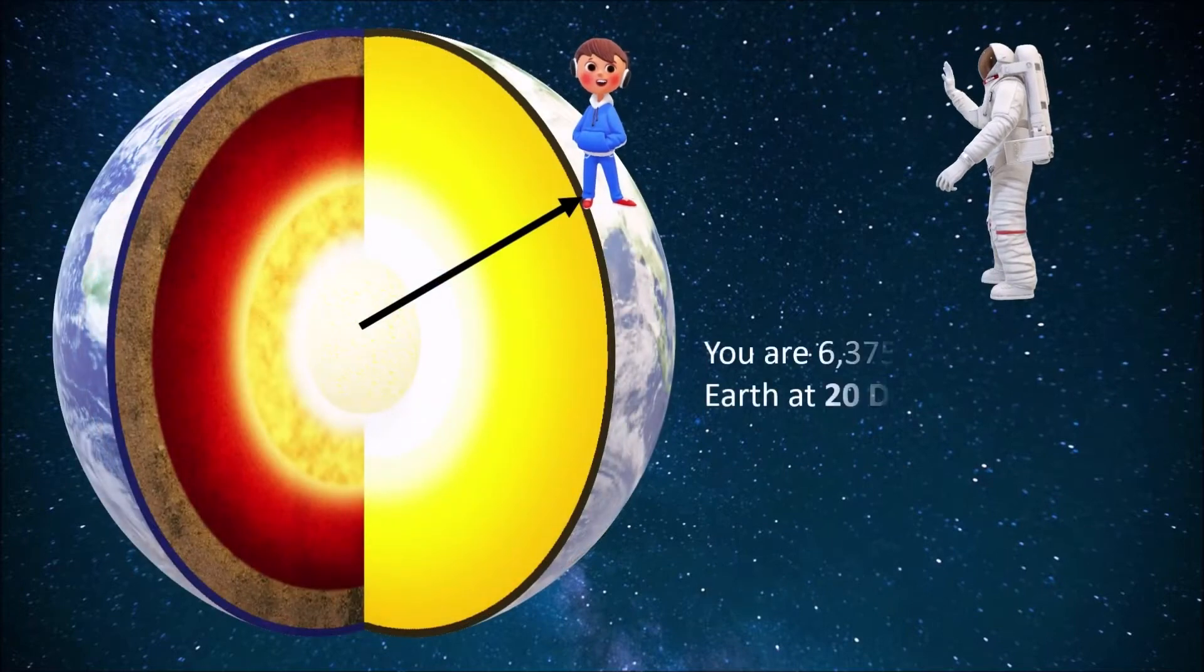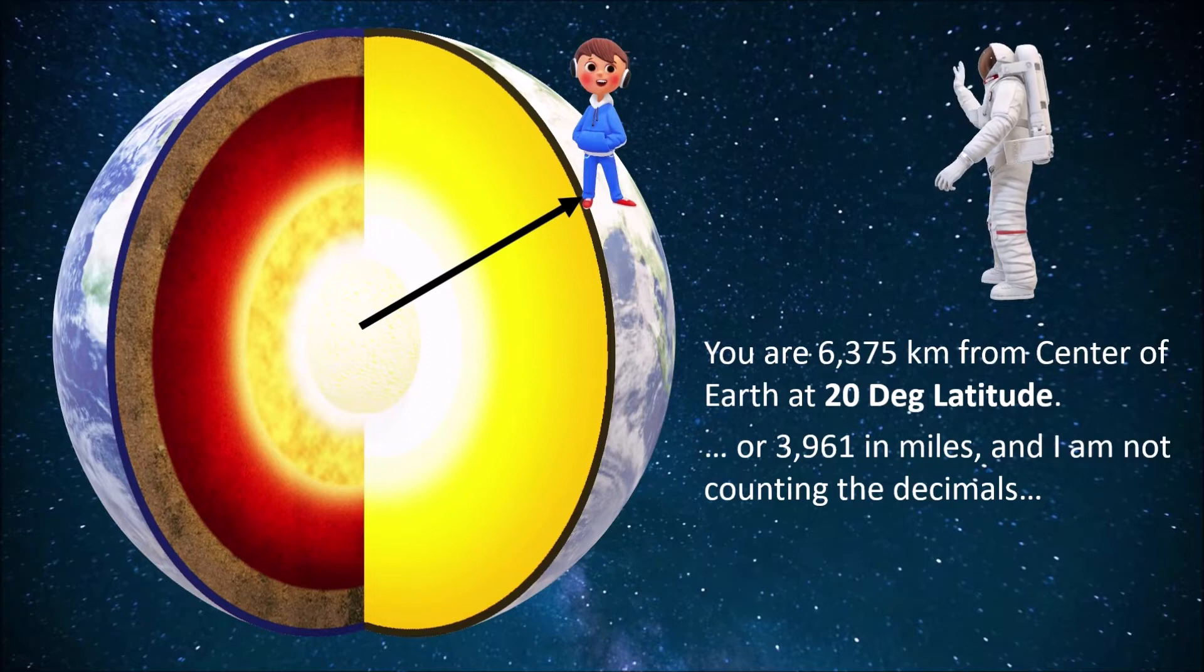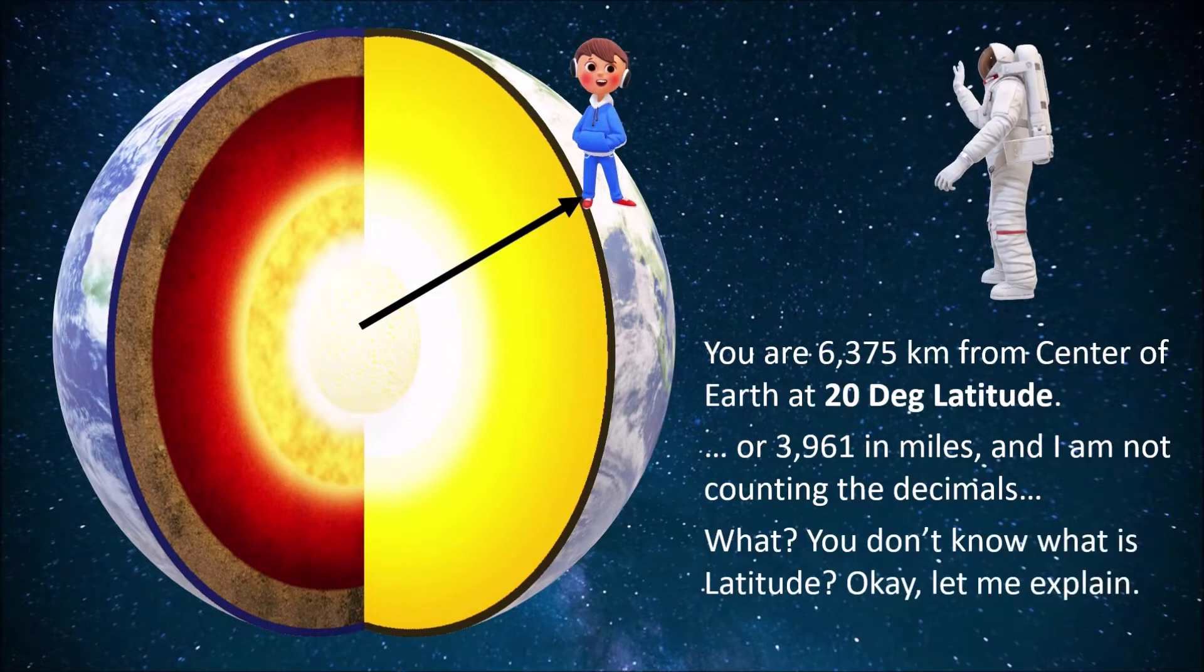You are 6,375 km from the center of the earth at 20 degree latitude, or 3,961 in miles, and I am not counting the decimals. What? You don't know what is latitude? Okay, let me explain.